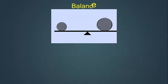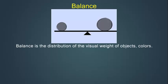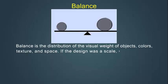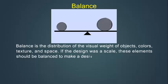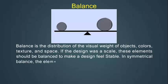Balance is the distribution of the visual weight of objects, colors, texture and space. If the design was a scale, these elements should be balanced to make a design feel stable.